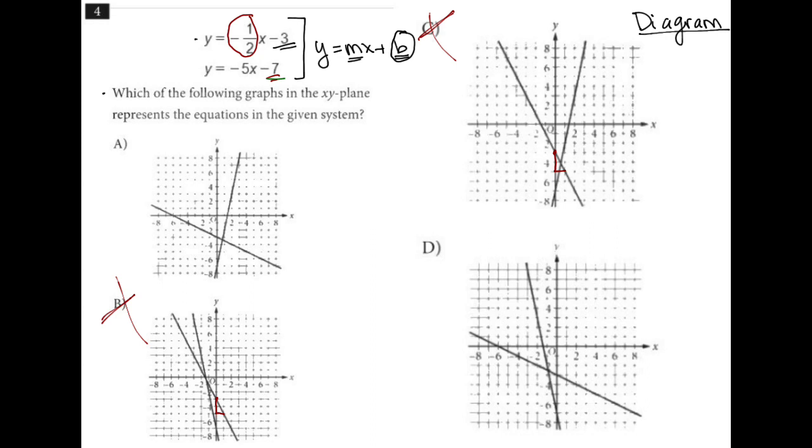So for the line that has a negative 7, like this one, it should have a negative 5, I'm sorry, negative 7 y-intercept. It should have a negative 5 slope. But this line has a positive slope, right? Like this is going up and to the right. So A is gone, which means D has to be the right answer.